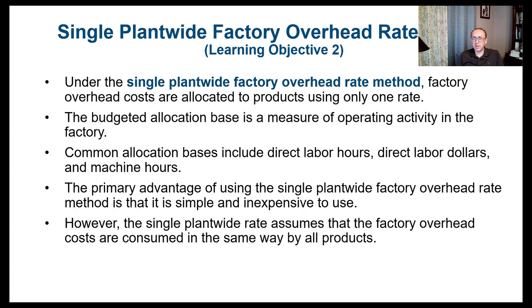Let's start with the first method: the single plant-wide factory overhead rate method. Under this method, factory overhead costs are allocated to products using only one rate, which is what makes it simple and easy. The budgeted allocation base is a measure of operating activity in the factory. Common allocation bases include direct labor hours, direct labor dollars, or machine hours — in our examples, we'll be using direct labor hours.